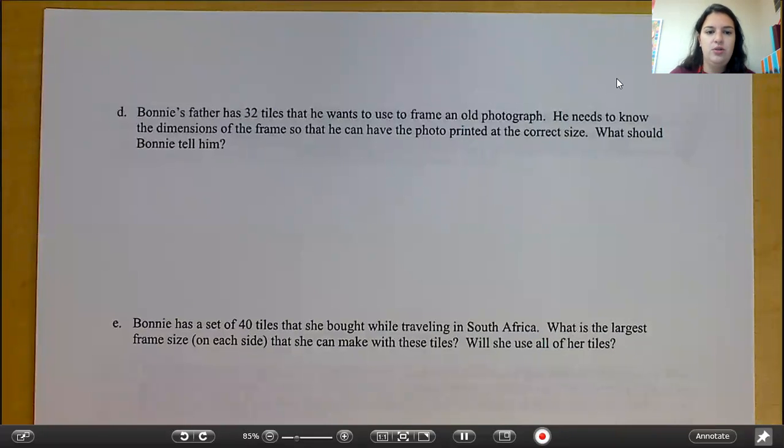Part D says, Bonnie's father has 32 tiles that he wants to use to frame an old photograph. He needs to know the dimensions of the frame so that he can have the photo printed at the correct size. What should Bonnie tell him? Go ahead and pause the video and answer part D.